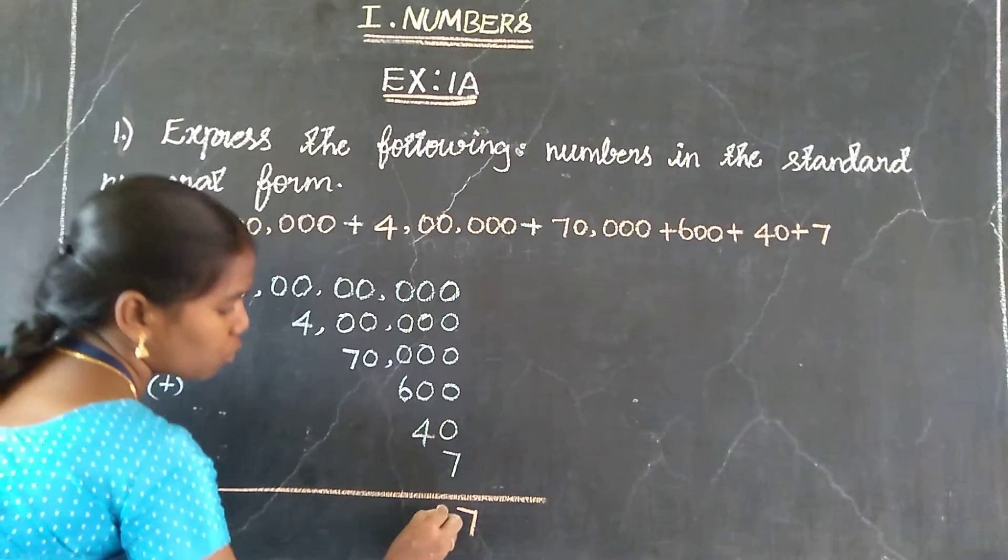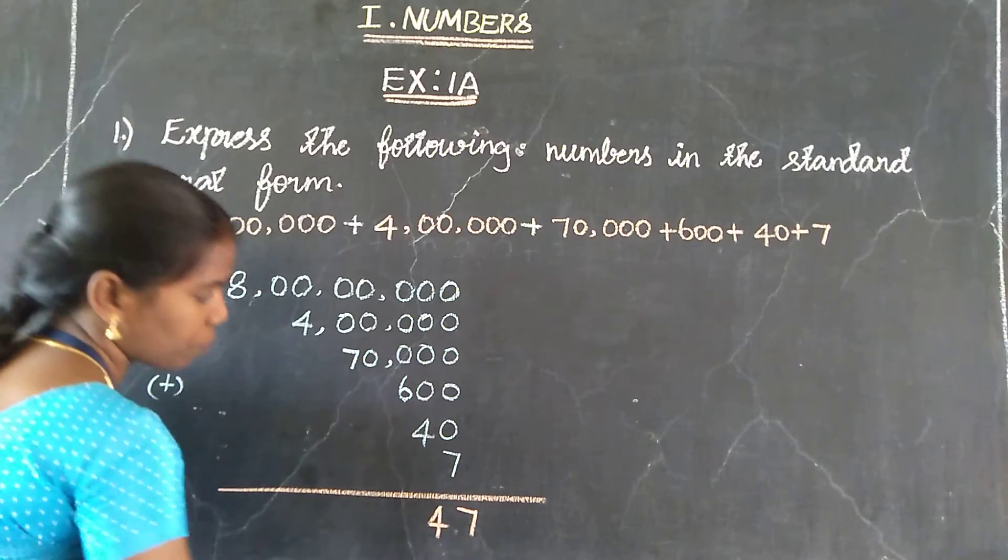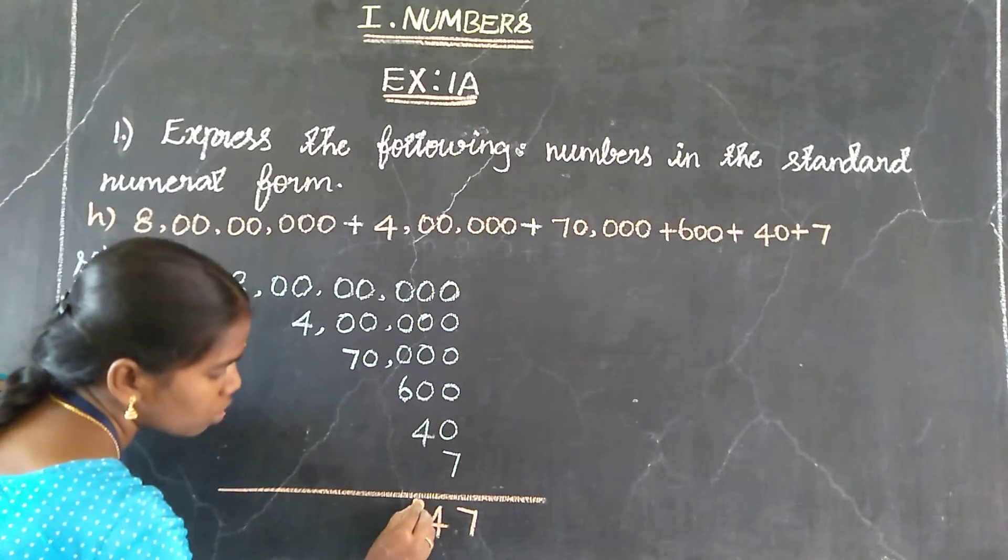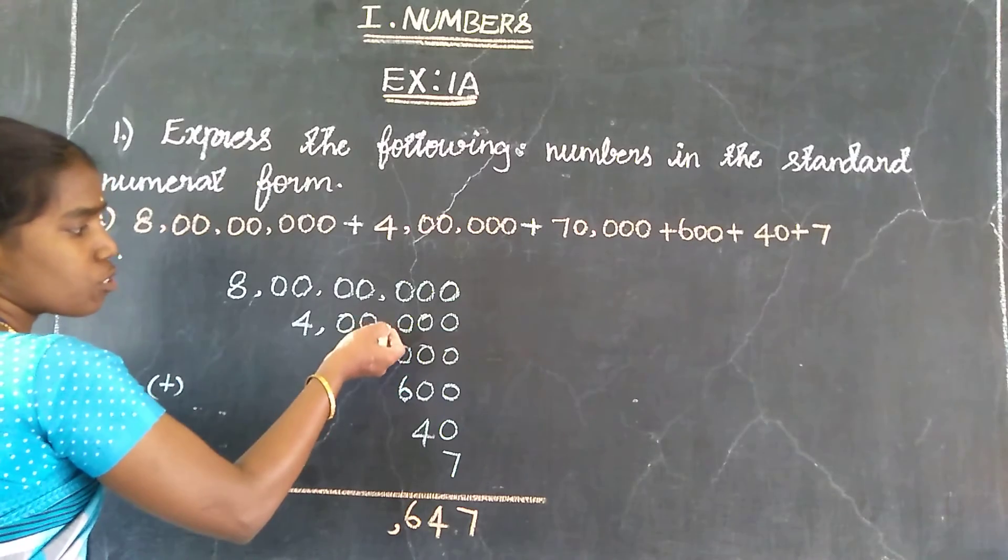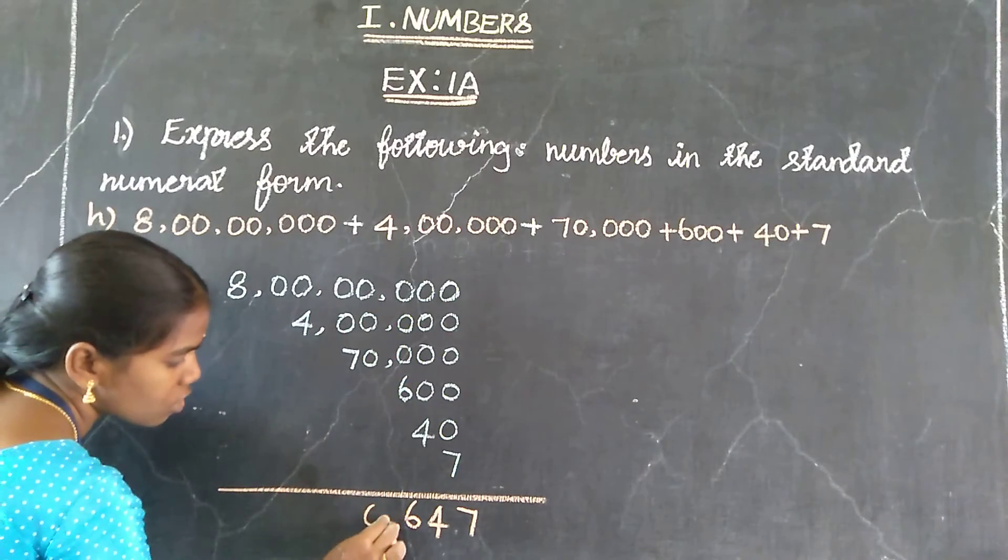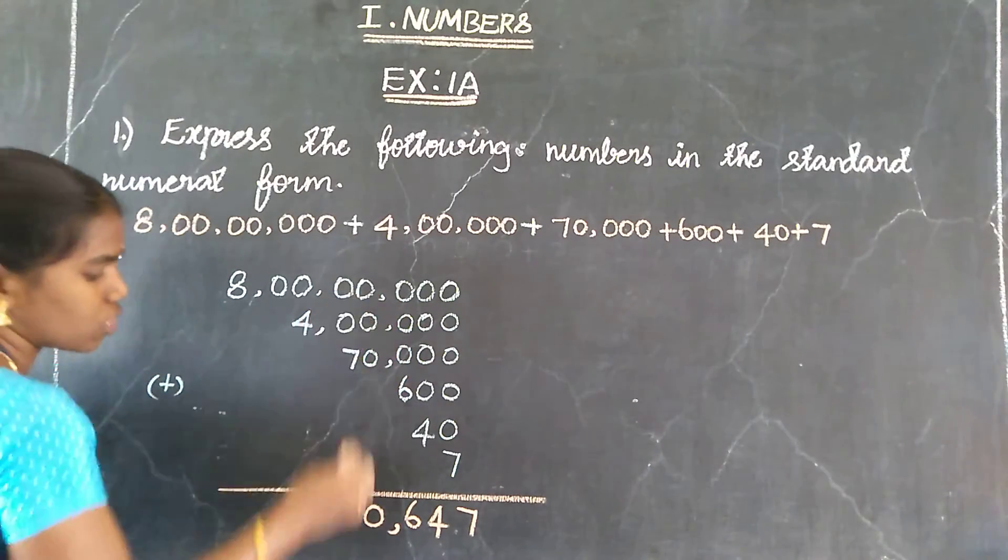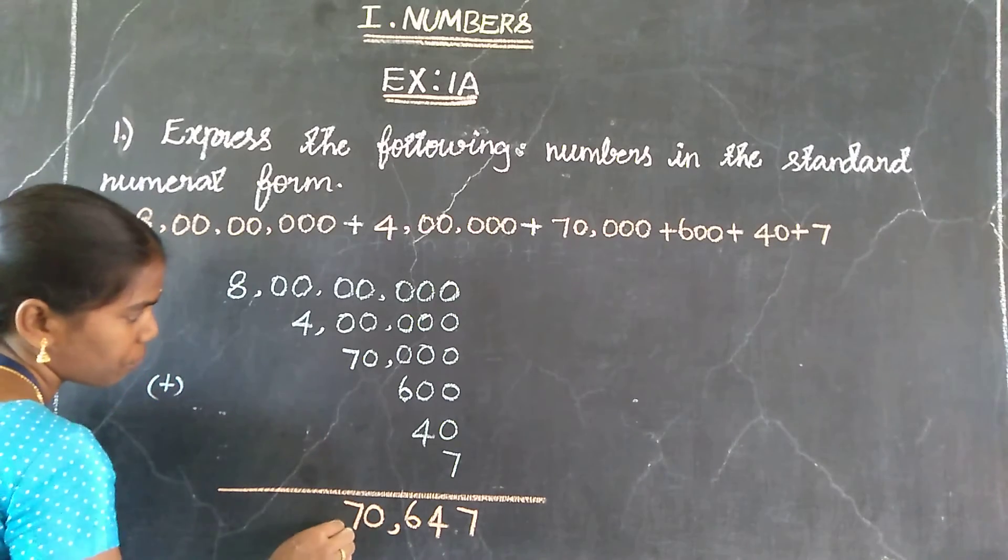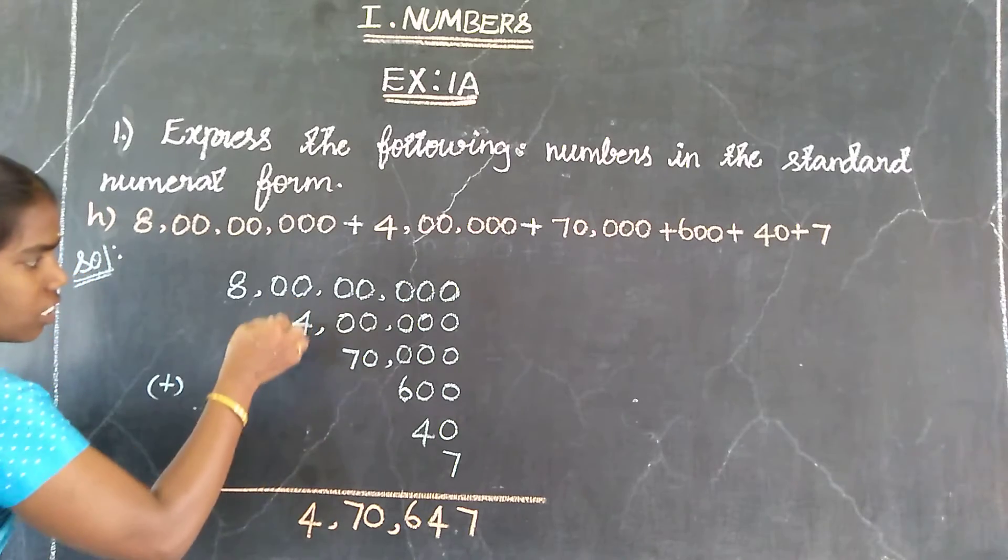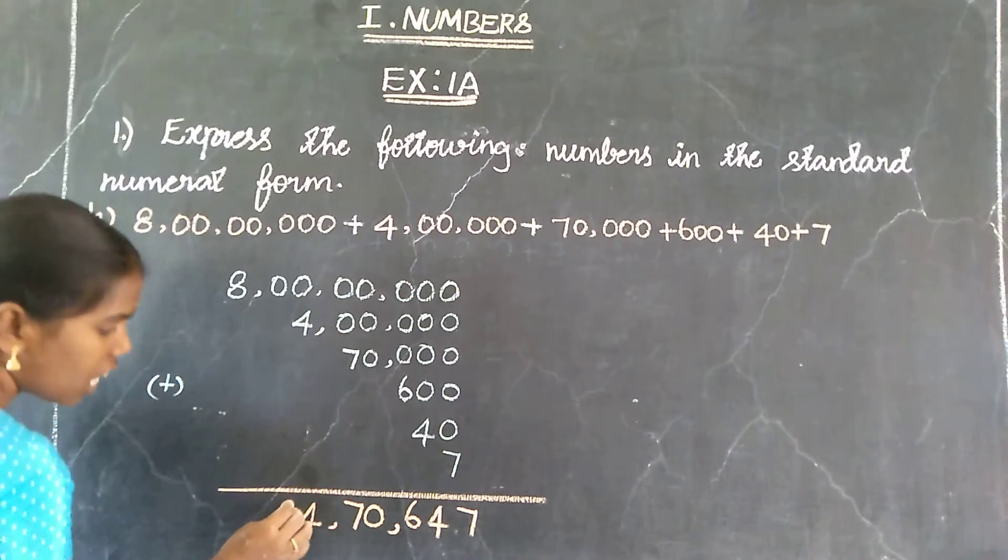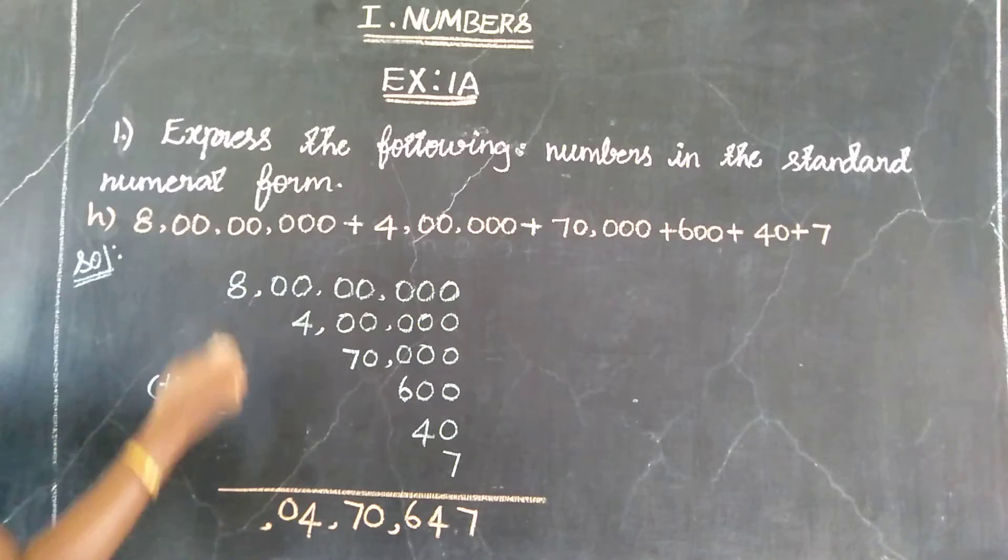6 plus 0: 6. Come on, it is 0, 0, 0. Always 0. 7 plus 0: 7. 4 plus 0: 4. Then no value, so 0. How do we write the value? Then 8.